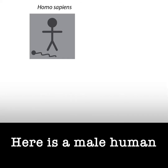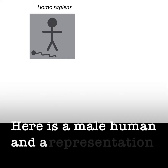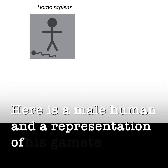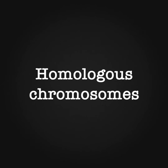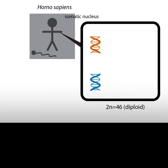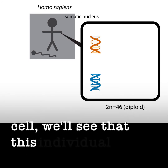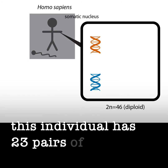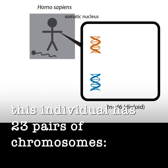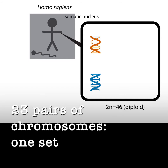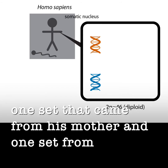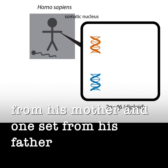Here is a male human and a representation of his gamete. Looking in a somatic cell, we'll see that this individual has 23 pairs of chromosomes. One set came from his mother and one set from his father.